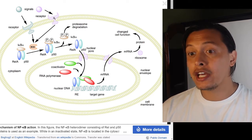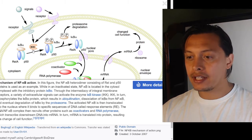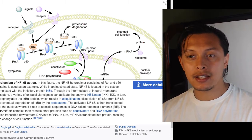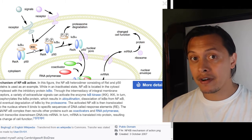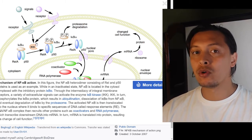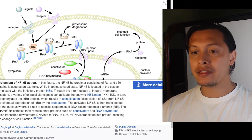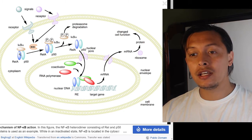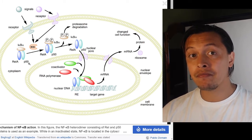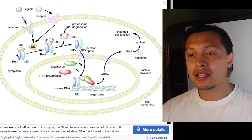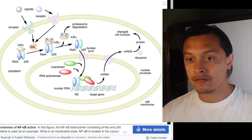One of the ways receptors transduce signals is with kinases. We have the IKK, the I-kappa B kinase. Kinases take ATP and remove one phosphate, adding it to a protein. In this case, we have the nuclear factor kappa B — specifically the RelA and p50 subunits. This is just one type of NF-kappa B.